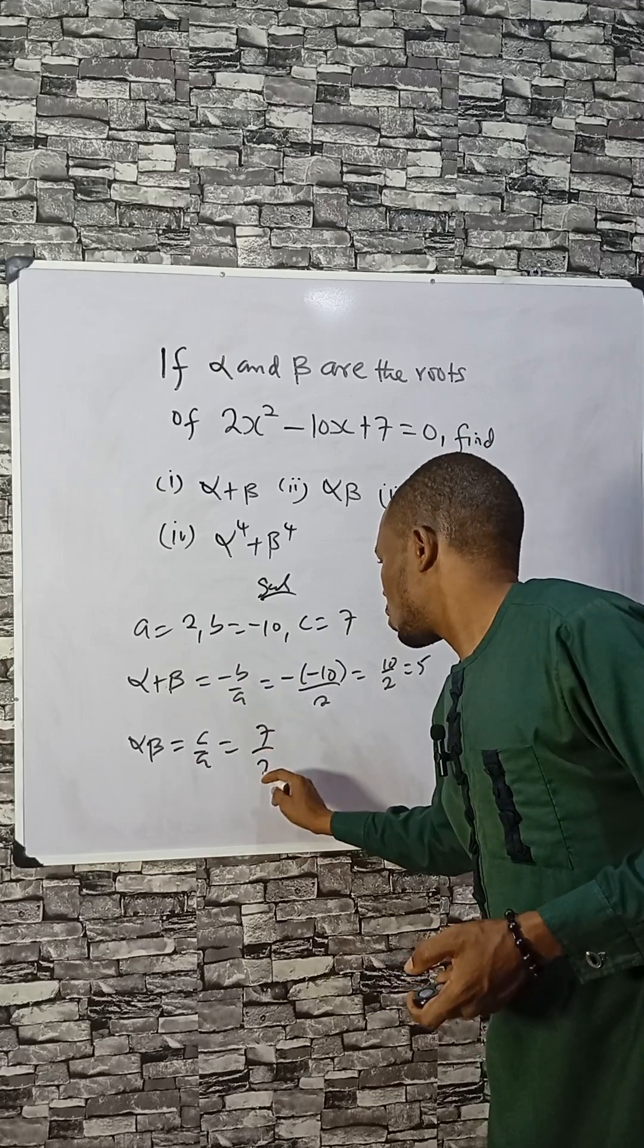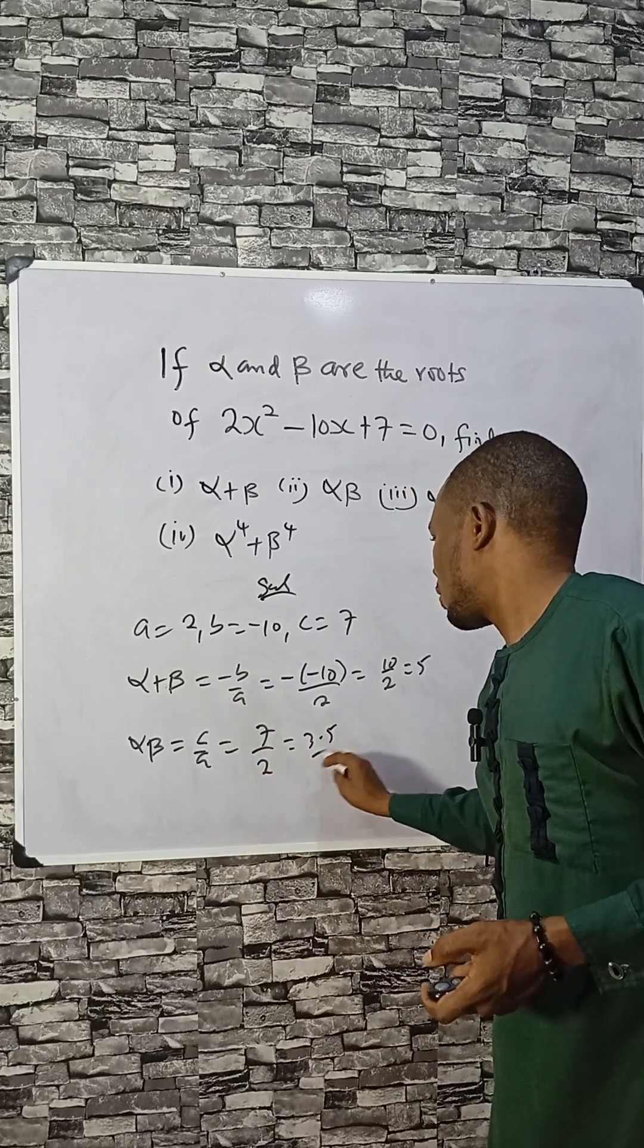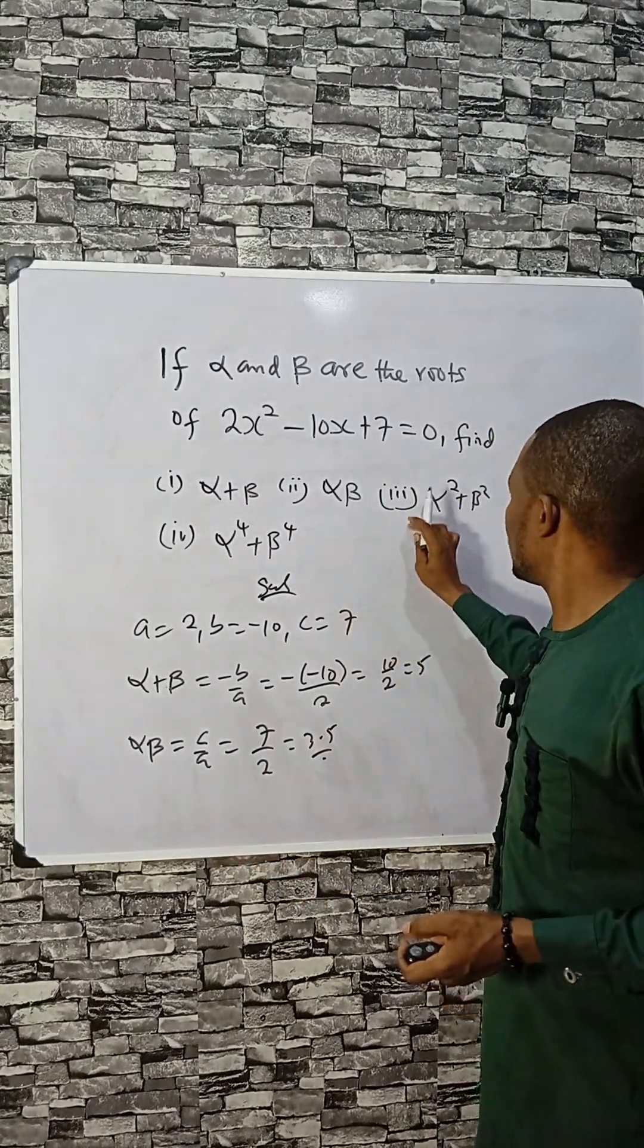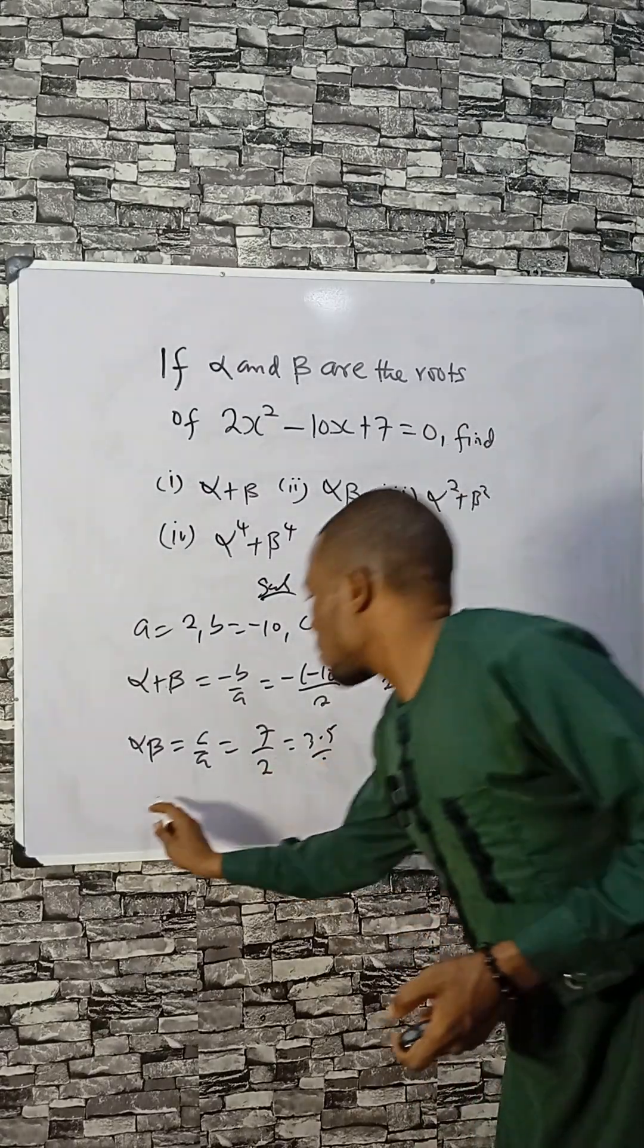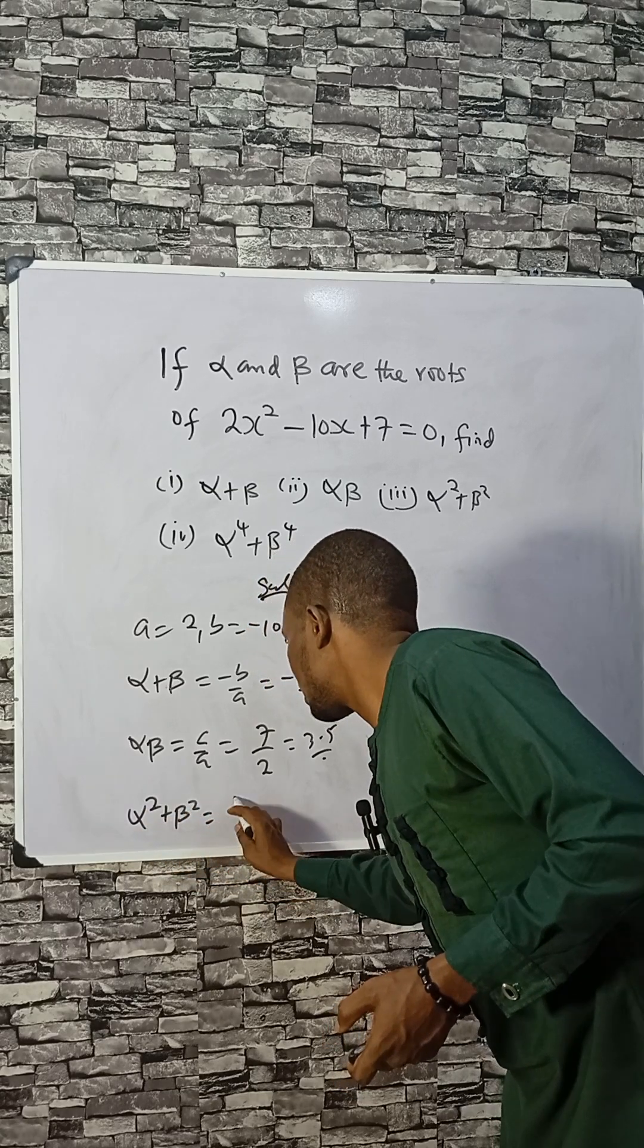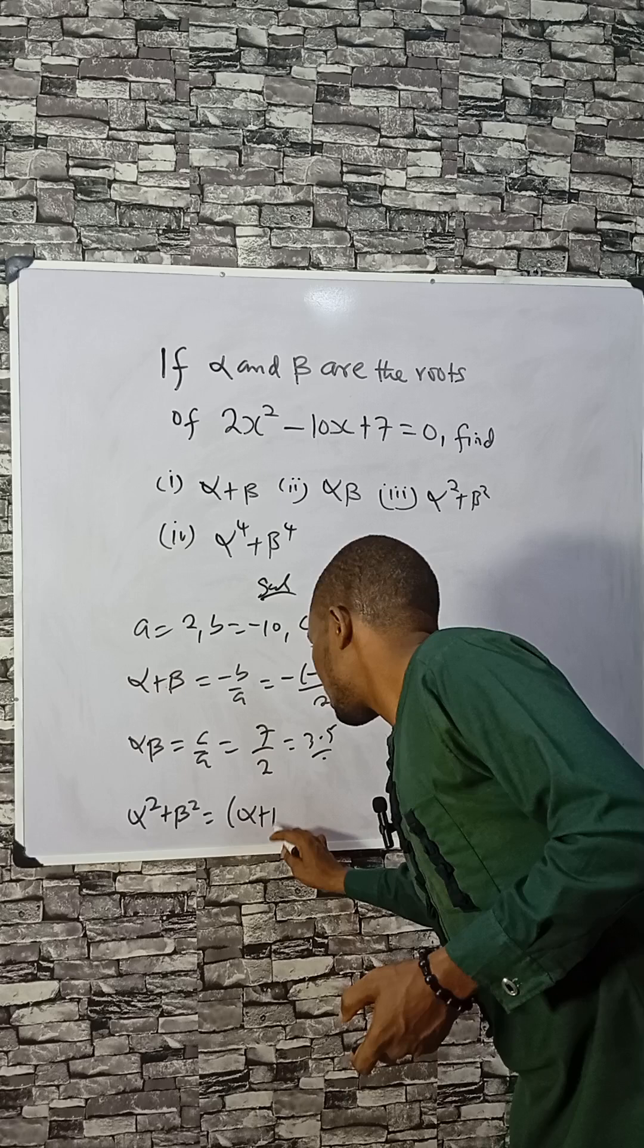The last one, or the third one, is alpha squared plus beta squared. Alpha squared plus beta squared is expressed as alpha plus beta squared minus 2 alpha beta. That is the identity.